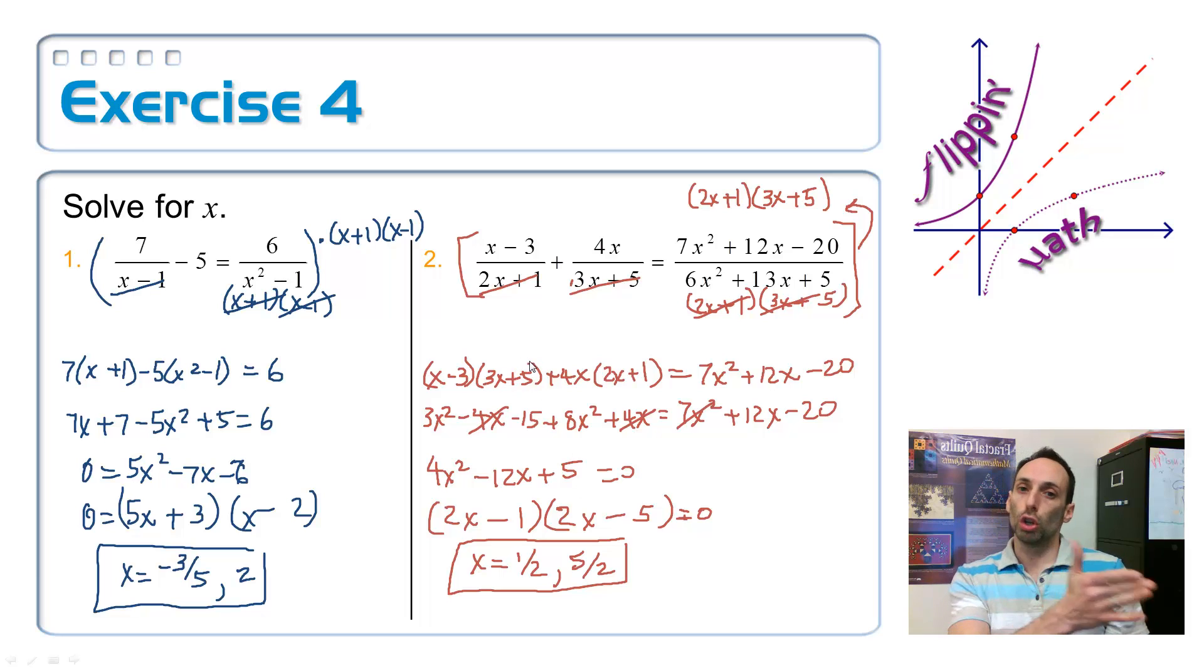So similarly, over here on number 2, maybe it looks a little bit more frightening because algebra. Anyway, I want to factor this bottom down here, and very conveniently, the same two factors are the ones that I get that were already on the left side of the equation. So there's the least common denominator. Multiply both sides by it. On the first one, the 2x plus 1 will cancel out, leaving you with the 3x plus 5 times the original x minus 3. And on the second one, the 3x plus 5 will cancel out, leaving you with the 2x plus 1 times the original 4x. Everything cancels out on the bottom of the last one.